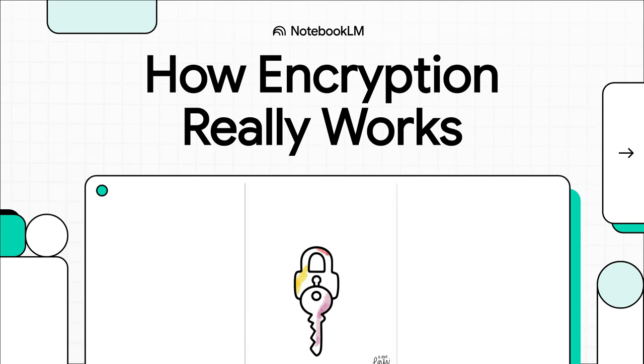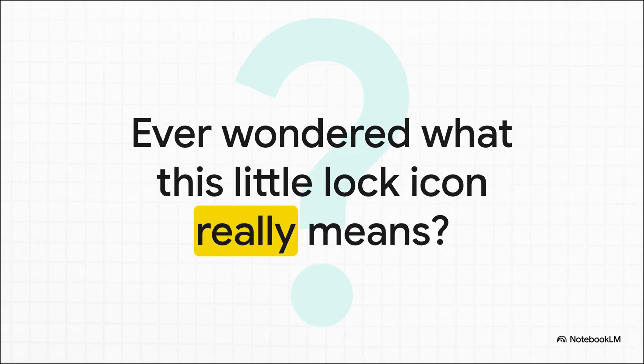Let's pull back the curtain on one of the most powerful, yet totally invisible forces that protects our entire digital world: encryption. It's the silent guardian of pretty much everything you do online, and today we're going to figure out exactly how it works. You see this little lock icon every single day, but have you ever stopped to wonder what's really going on behind the scenes? What's the complex machinery working behind that simple symbol to shield your messages, your passwords, your credit card numbers from prying eyes? That's the mystery we're unpacking today.